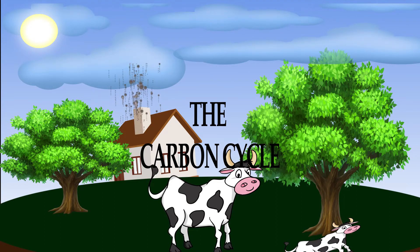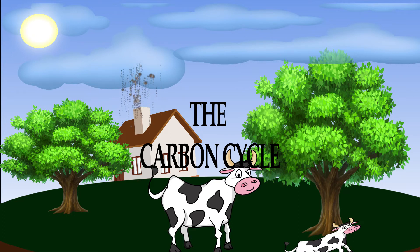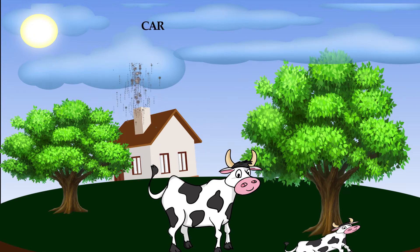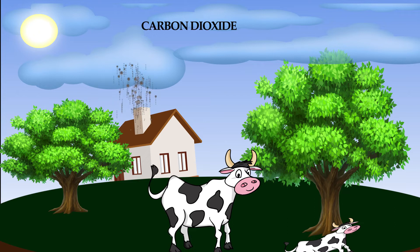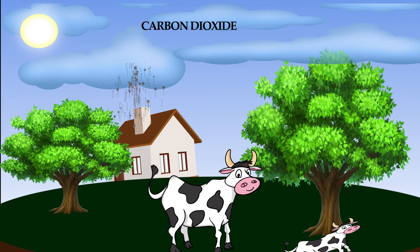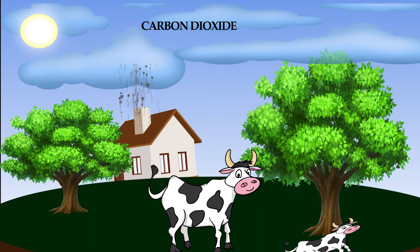In the carbon cycle, carbon dioxide travels from the atmosphere into living organisms and back to the atmosphere. When we cook, we release carbon dioxide through a process called combustion. When we exhale, we release carbon dioxide through the process of respiration.